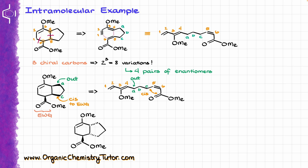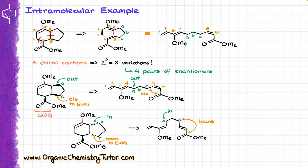What about a molecule with mixed wedges and dashes? In this case, atom A is trans to my electron-withdrawing group, which means that atom would have to end up being in in my starting material. Atom C is also trans to our electron-withdrawing group, so in my starting material I would have to show that as trans as well — meaning my starting material would look something like that, where atom A is an in-atom and atom C is trans to our electron-withdrawing group in the dienophile part of the molecule.